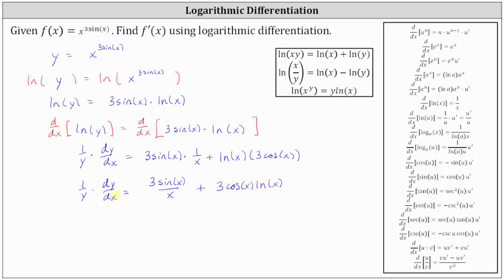Now we need to solve the equation for dy dx by multiplying both sides of the equation by y. On the left, y times one divided by y is one, so one times dy dx is dy dx. We have dy dx equals, on the right, y times three sine x divided by x plus three cosine x natural log x.